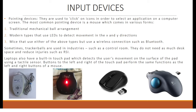Pointing devices are used to click on icons to select applications on a computer screen. The most common is a mouse, which comes in various forms: the traditional mechanical ball arrangement, modern types that use LEDs to detect movement in the X and Y directions, and mice that use wireless connections such as Bluetooth. Tracker balls are used in industries such as control rooms — they need less desk space and reduce RSI. Laptops have a built-in touchpad that detects movement using a tactile sensor, with buttons performing the same functions as left and right mouse buttons. The pictures show a mechanical ball mouse, an LED mouse, a wireless USB mouse, and a wireless USB tracker ball mouse.